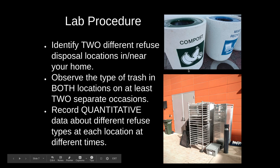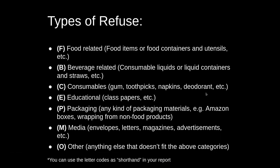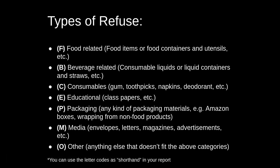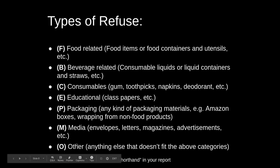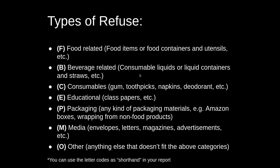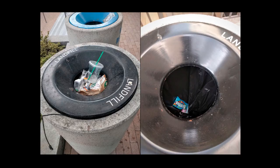You're going to use this classification of trash: food-related (F), beverage-related (B), consumables (C), educational items (E), packaging (P), media (M), and other (O). You'll count the different types of refuse that fall under each of these categories at each of your locations at each time you go to observe.